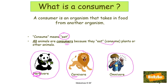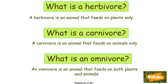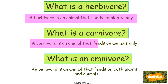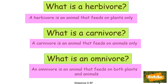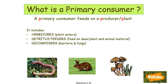Omnivores are organisms that eat both meat and plant material — that would be ourselves. Some of us might have made the decision to give up meat and be vegetarians, but biology has designed us to eat meat and plant. Strictly speaking from a biology point of view, we are omnivores. In a nutshell: a herbivore is an animal that feeds on plants only, a carnivore is an animal that feeds on animals only, and an omnivore is an animal that feeds on both plants and animals.